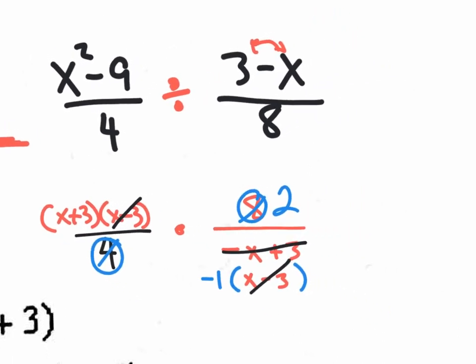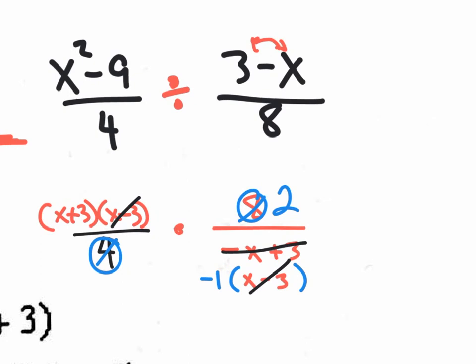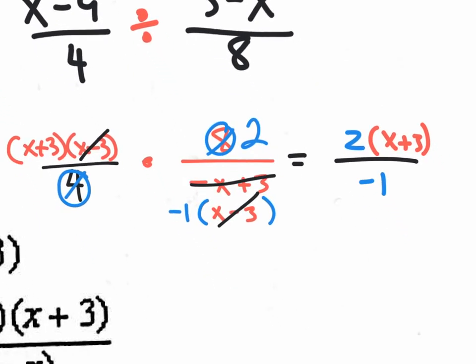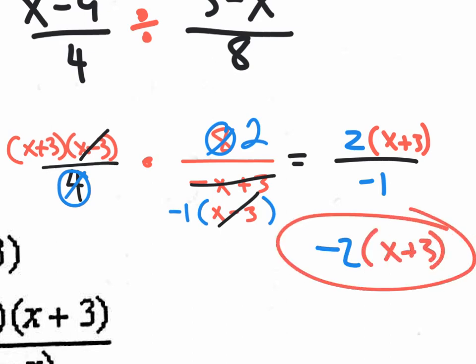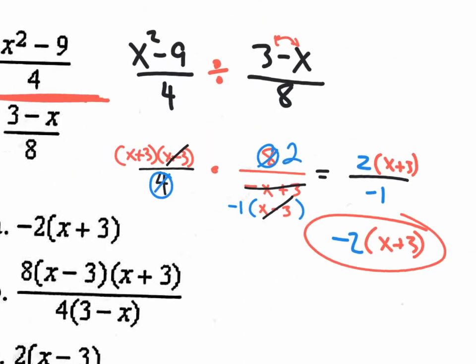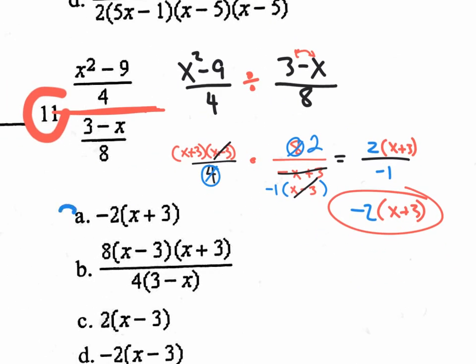The final answer is (X + 3) with the 2 left over and a negative 1 on the bottom. When you divide by negative 1, all it does is change the sign. So 2 divided by negative 1 is negative 2, and you still have that X + 3. The answer is negative 2 times (X + 3), which is option A.